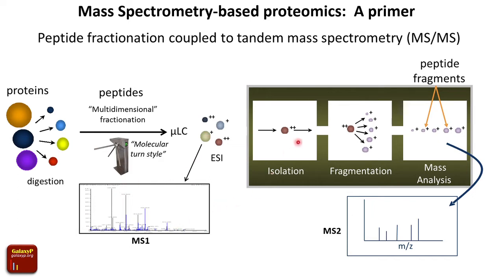Different peptides of different sequences and sizes are detected at any given moment in the mass spectrometer. They're isolated, and those isolated peptides are then fragmented. The masses of those fragments are recorded in a matter of tens of microseconds, such that the mass spectrometer records the fragmentation pattern for one peptide, then goes and gets the next peptide, fragments it to create another MS-MS or tandem mass spectrum. These fragmentation spectra are unique to the amino acid sequence of the peptide that was selected and fragmented.